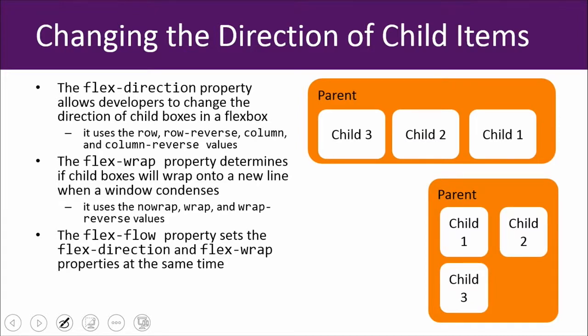The Flex wrap property, which is shown here, makes the third child, if the screen size shrinks from the left to right in this instance, you can make the third child drop down a line, and we can do that with the wrap value.